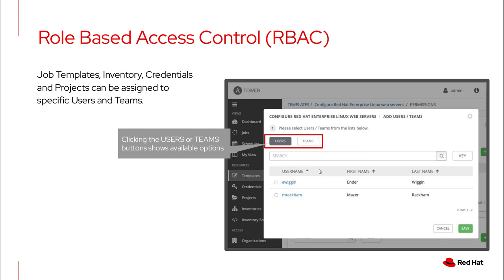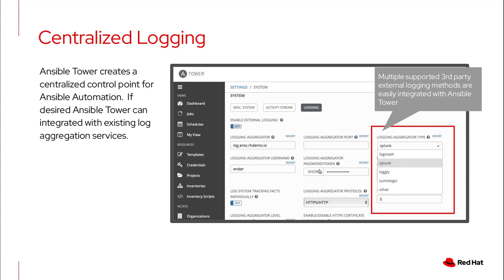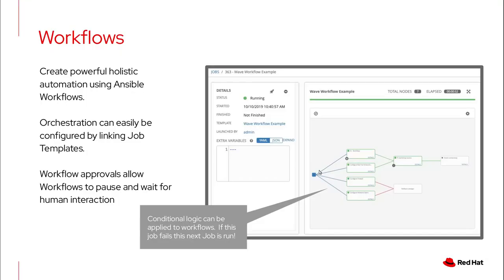RBAC is role-based access control. Enterprise authentication options include Azure, GitHub, Google OAuth 2, LDAP, Redis, SAML, and TACACS+. Centralized logging: you can send it to Splunk, Sumo Logic, Loggly, and Logstash - if you don't want to store it in the Tower interface. If you have a job that repeats every hour and you see something unexpected, you can send it to Splunk and have Splunk do its thing. Workflows are literally a flow chart: I start here, if it fails I go here, if it succeeds I go to the next one. It's just a workflow for playbooks.